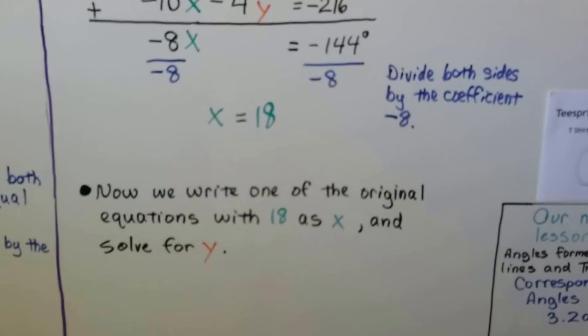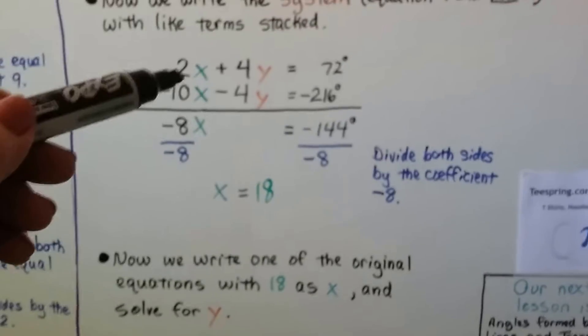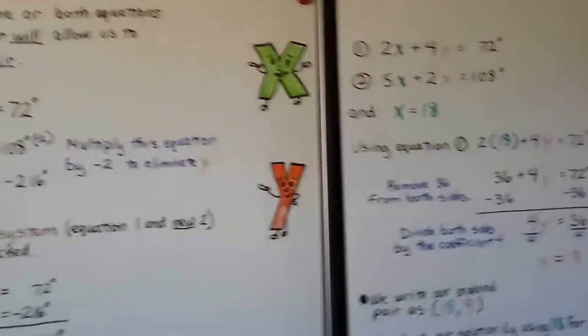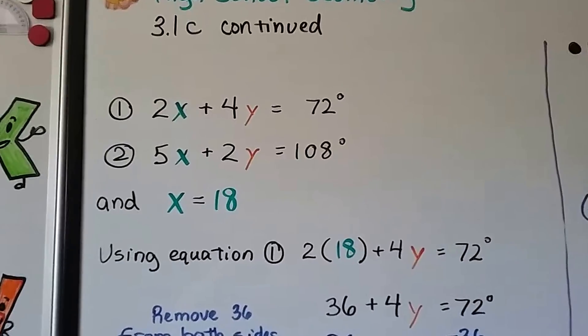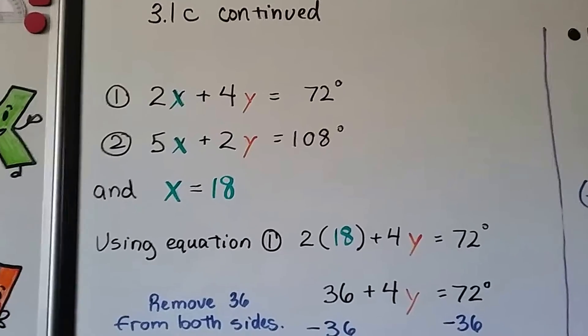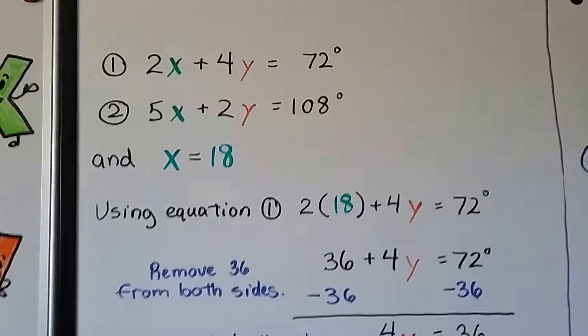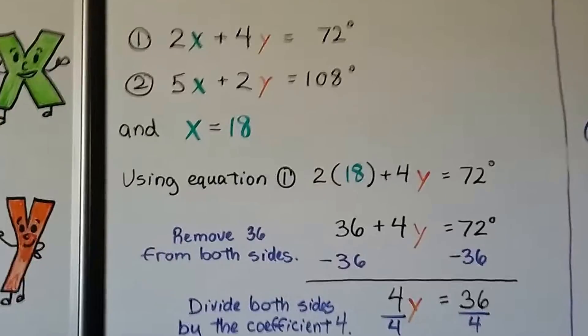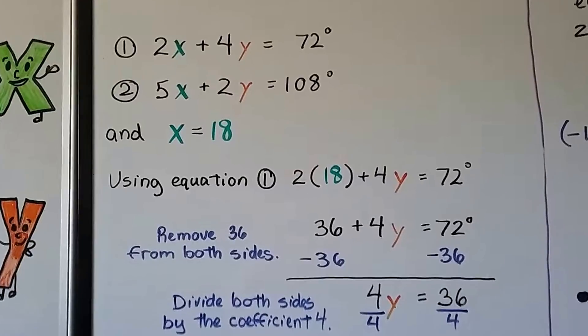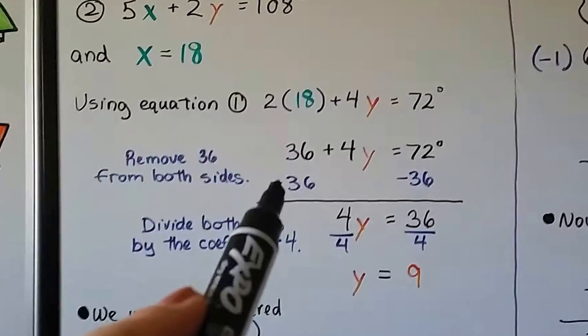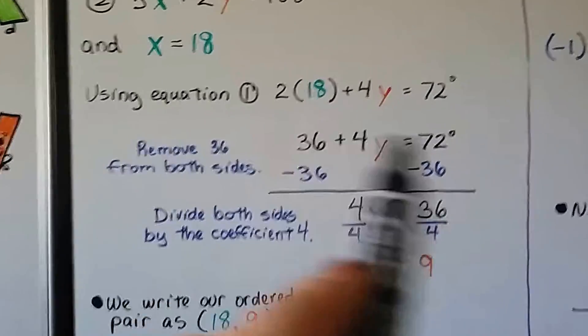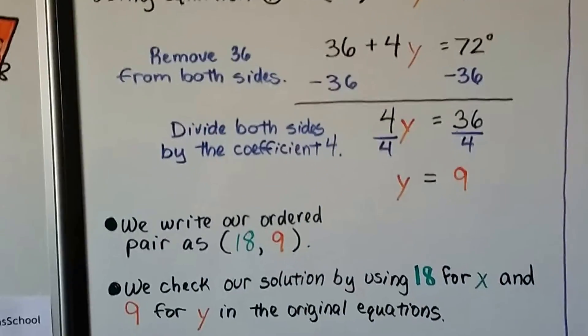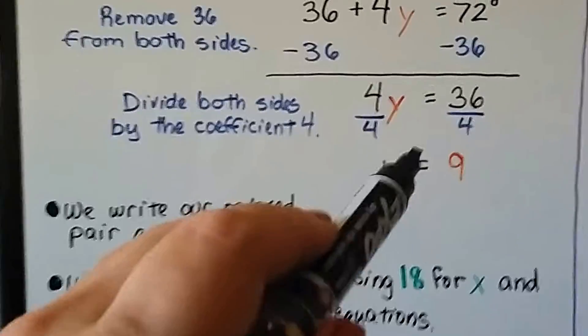Now we write one of the original equations with 18 as x and solve for y. So we could pick any one of these, like, you know, the original equations, not the new two. We would pick one of the original ones. So this is what we would have. We would have this 2x plus 4y equals 72 degrees. And the original number 2 equation, 5x plus 2y equals 108. We're going to put that x equals 18 that we found. We're going to put that in to that first equation. So now we've got 2 times 18 plus 4y equals 72 degrees. And we remove this 2 times 18 is 36. We remove the 36 from both sides of the equation to make a zero pair here. And we're left with 4y equals 36. We divide both sides by the coefficient 4. And 4 over 4 gives us a 1y equals 9.